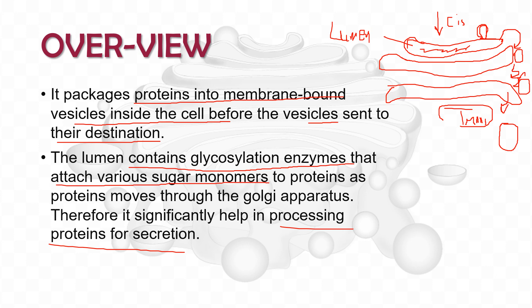You might wonder why sugar monomers are added to proteins and lipids. As proteins exit through the trans phase of the Golgi apparatus toward their destination, they need to know where to go. The sugar monomers added inside the lumen act as signal sequences attached to the proteins, directing them to their particular destination within or outside the cell.